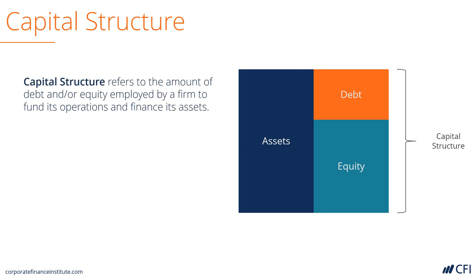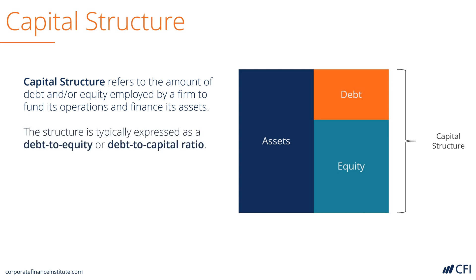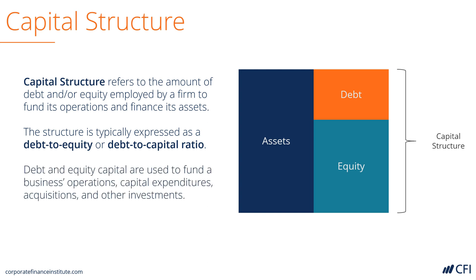A firm's capital structure refers to the amount of debt and/or equity that it uses to fund its operations and buy its assets. It's typically expressed as either a debt-to-equity or debt-to-total-capital ratio.